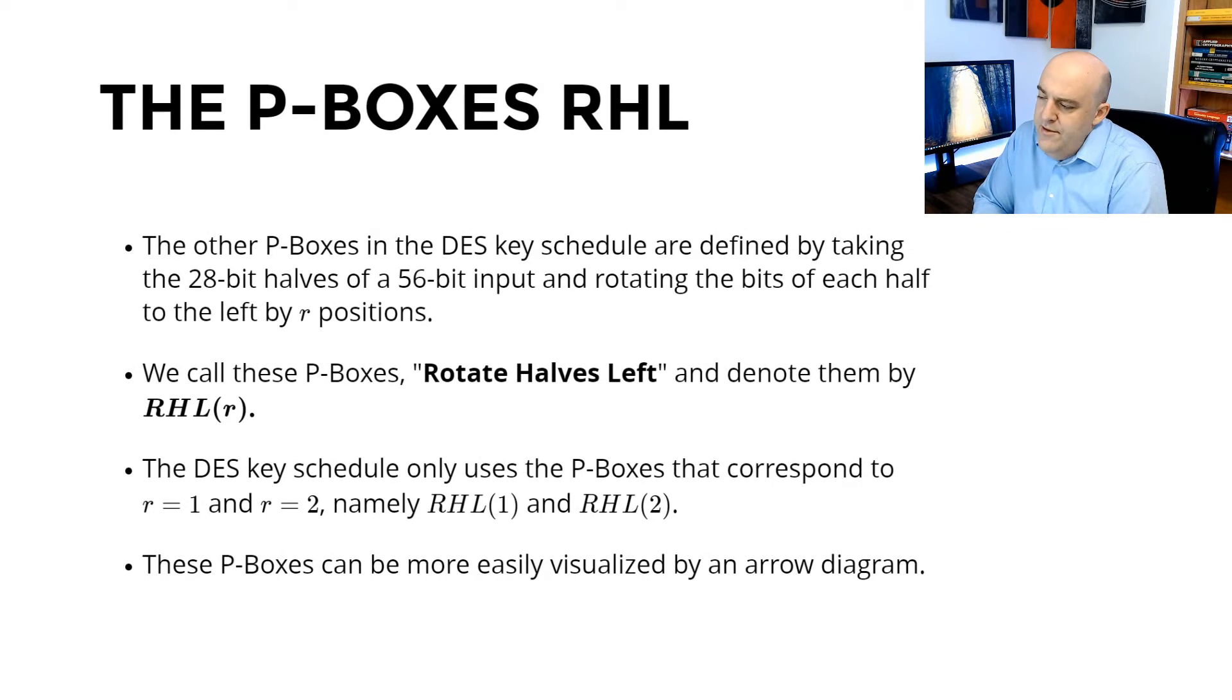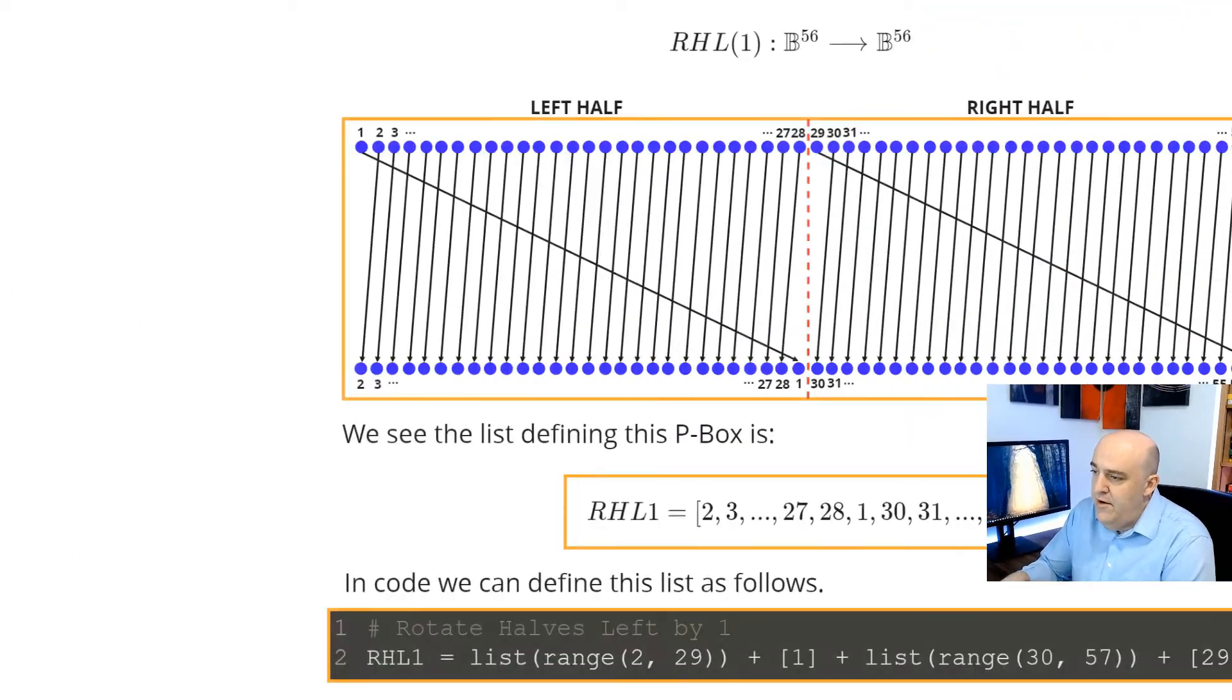The other important P-boxes used in the Key Schedule of DES are going from B^56 to B^56. The way to define these P-boxes, you imagine an element, a 56-bit element. The left half and the right half are each 28 bits. And then we rotate these bits on each half left by a number of positions R. In the DES Key Schedule, we'll only use the values of R equals 1 and 2 for the implementation of the Key Schedule. But you could really define RHL for any value of R. And these might be easier to imagine or visualize as an arrow diagram, which we'll see right here.